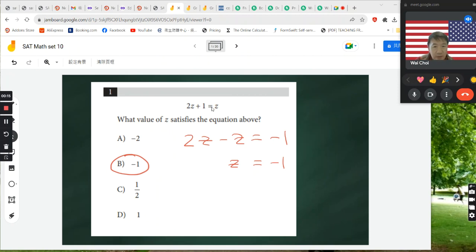What you want to do is subtract z from both sides of the equation. On the right side, this will cancel out. On the left, it will show up as negative z. So you have 2z minus z equals,